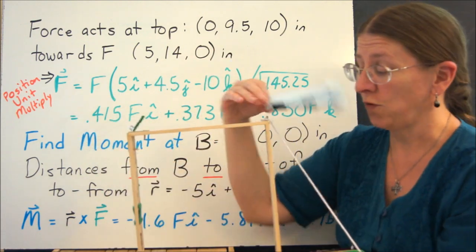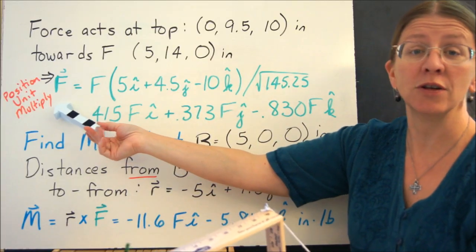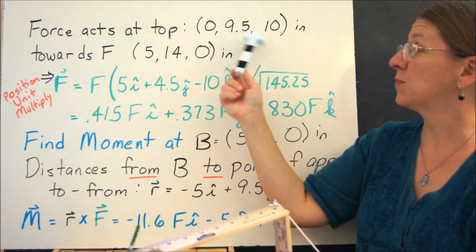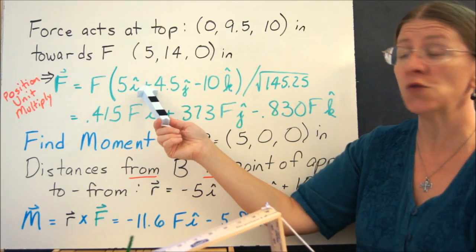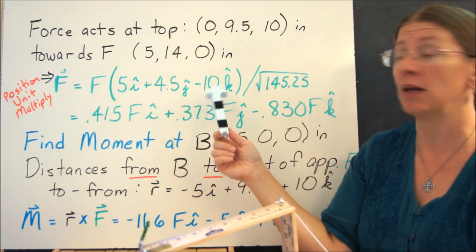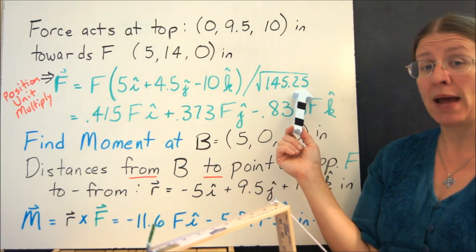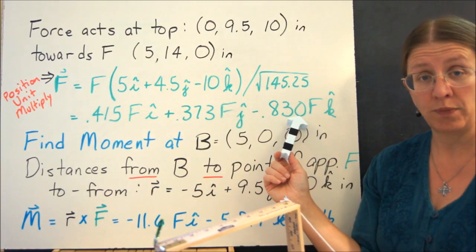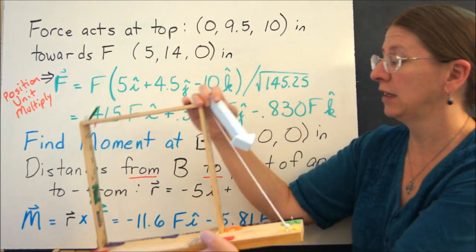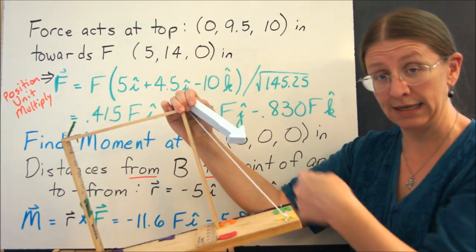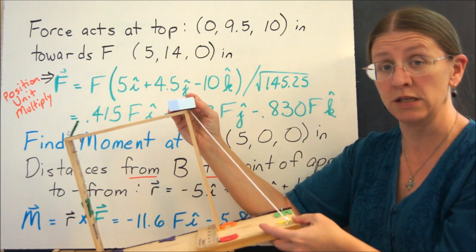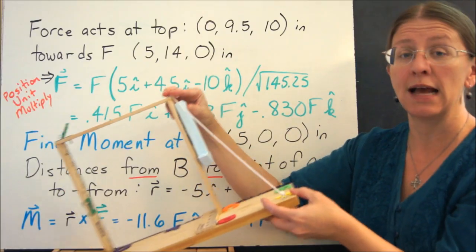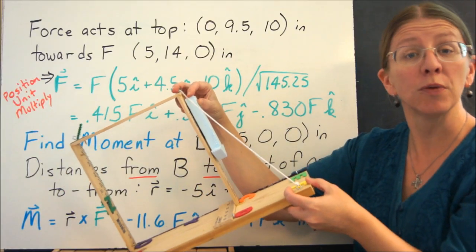First, I have to find this force. I'm going to use position vector, unit vector, multiply. My force goes from this point to this point, so my position vector is 5i + 4.5j - 10k. Divide that by its magnitude and multiply by F to give me my vector F. Now my vector F clearly has components going along the x-axis, along the y-axis like that, and it's going to have a component along the z-axis like this. So I have all three components in F.